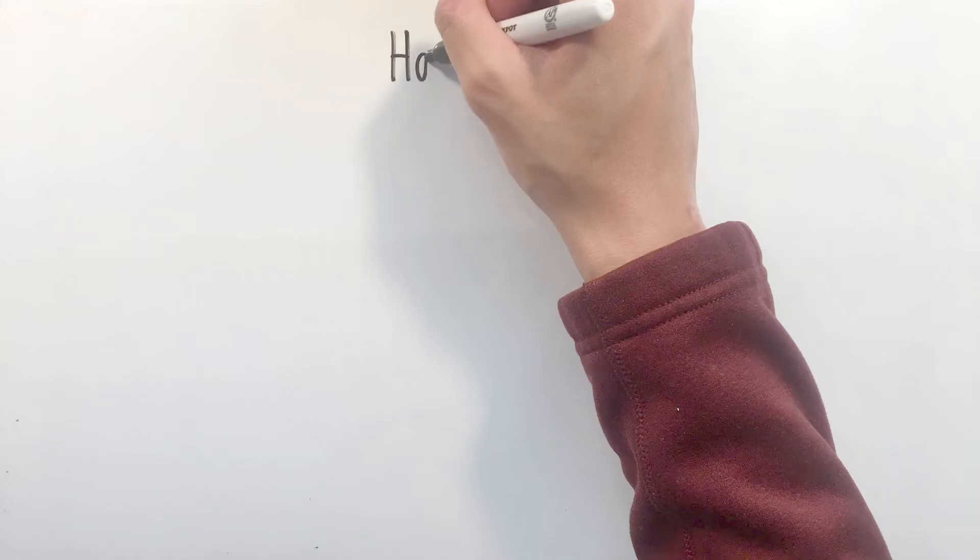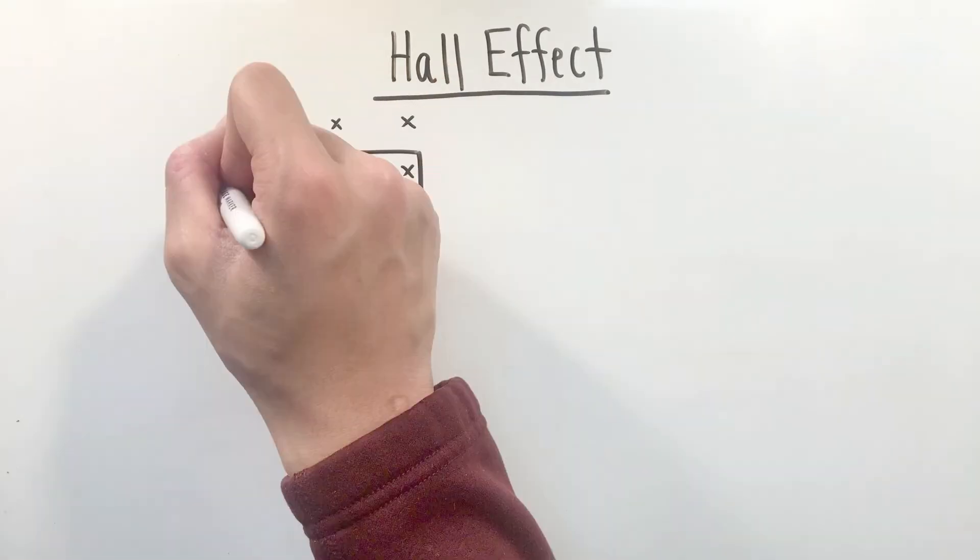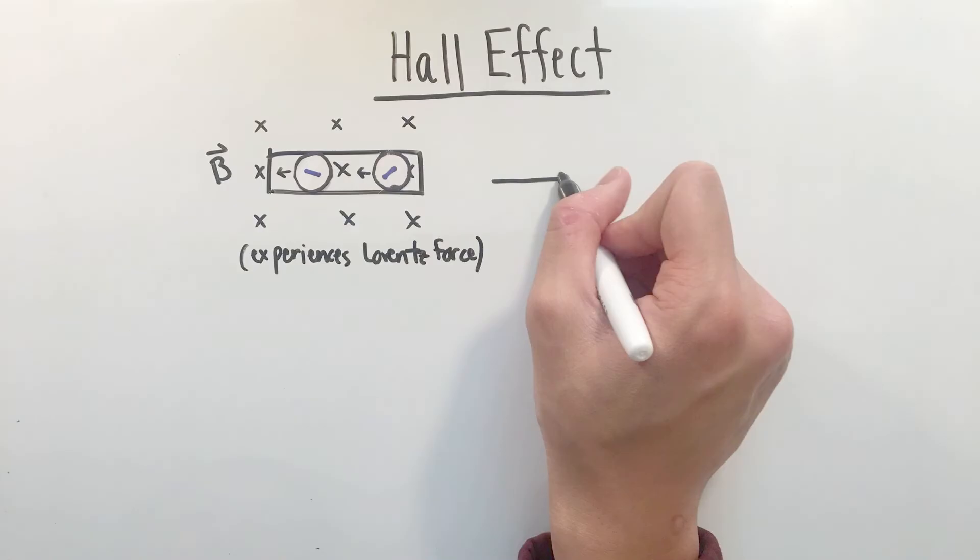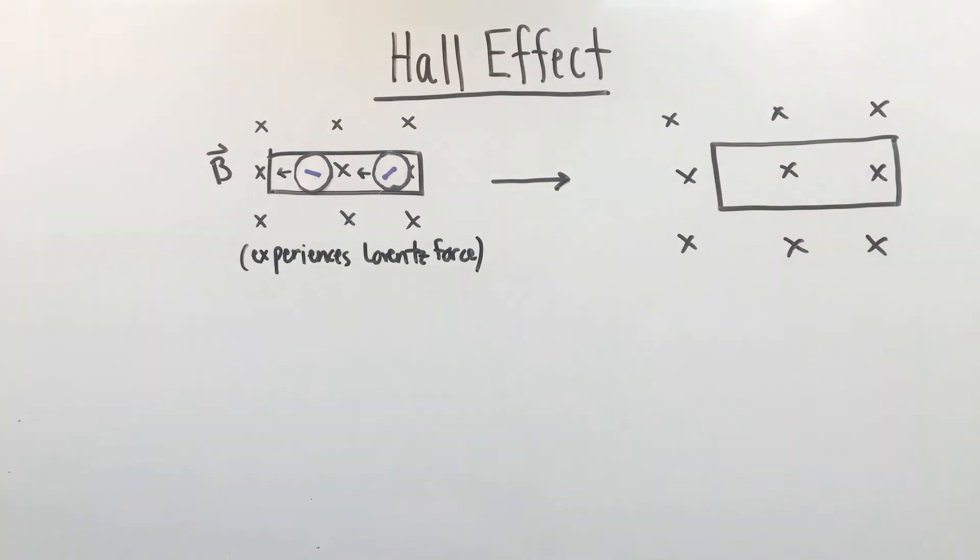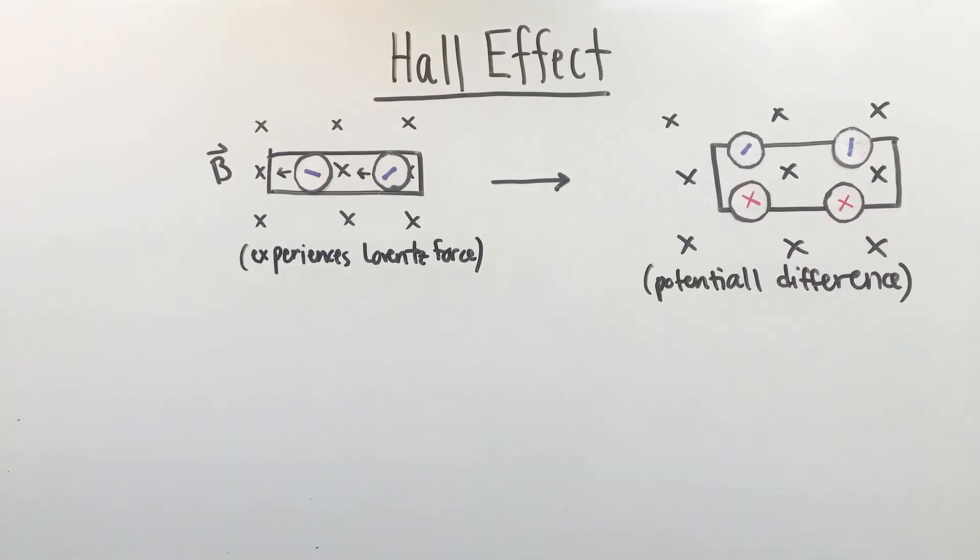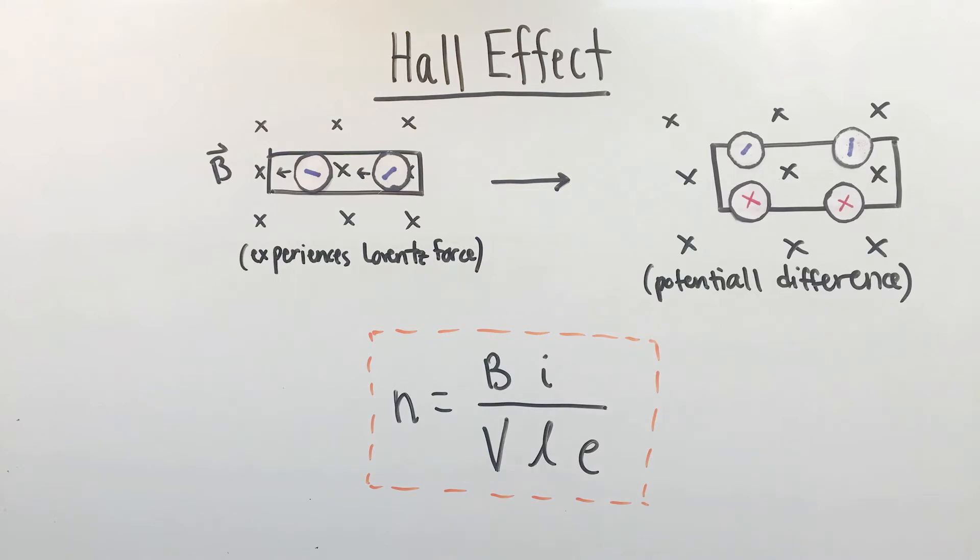One final phenomenon associated with the Lorentz force is known as the Hall effect. The Hall effect describes the potential difference formed in a current carrying conductor when placed in the magnetic field, as the moving charges will feel a Lorentz force and be deflected, thus creating an electric field across a conductor that opposes the Lorentz force until they cancel each other out. Using the magnetic field, current, charge, thickness, and potential difference of the conductor, it's possible to find the number density of charge carriers.